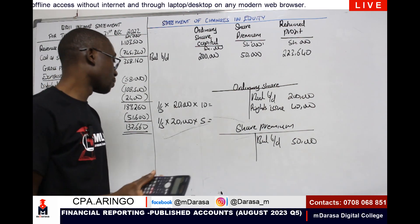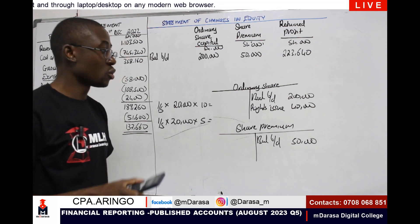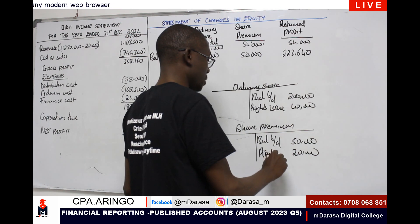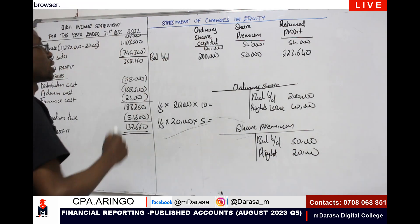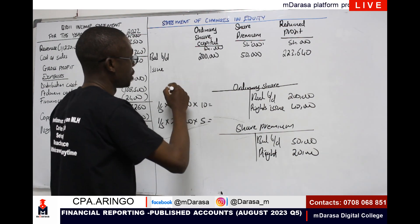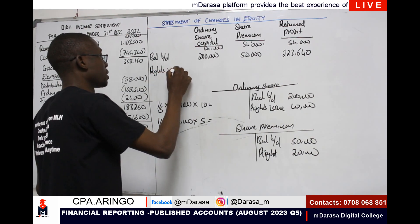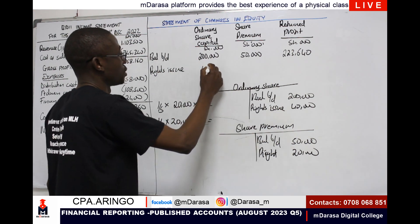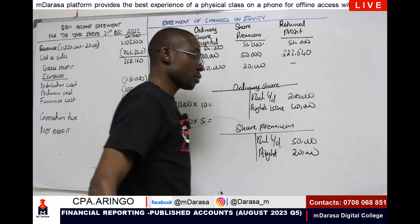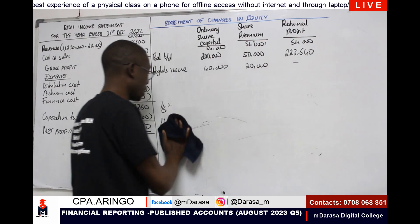So in our statement of changes in equity, we should be having a rights issue row where there is an increase in ordinary share capital of 40 and share premium of 20. That is what we should be having from the interpretation of that note. The next item to consider is something else that will affect our ordinary share capital.